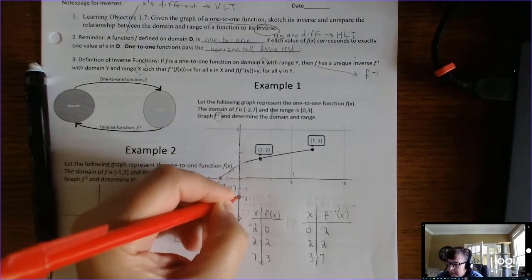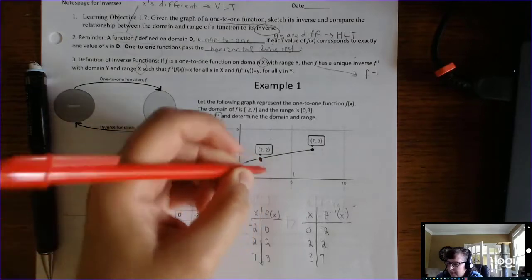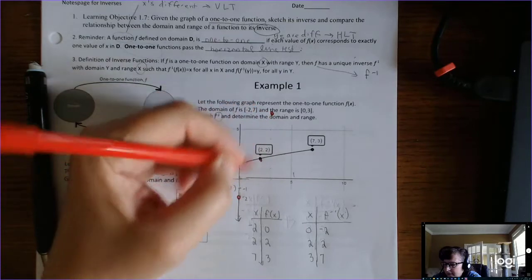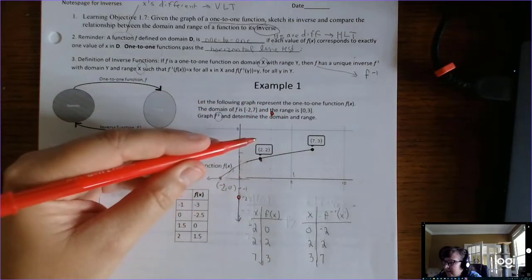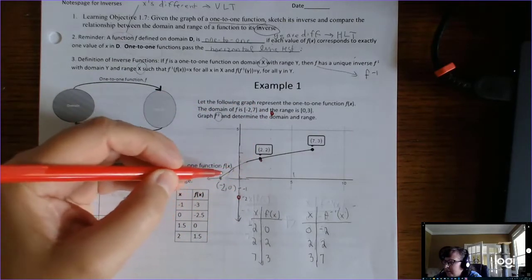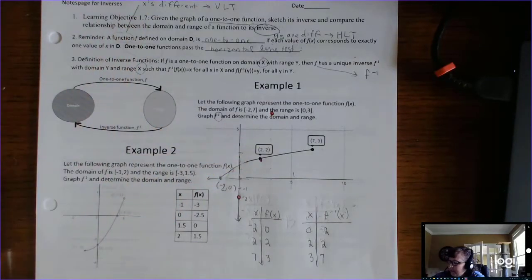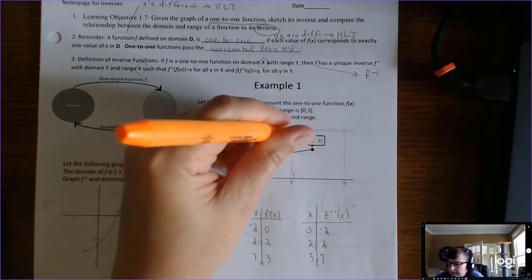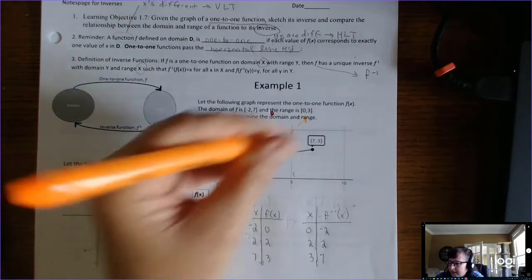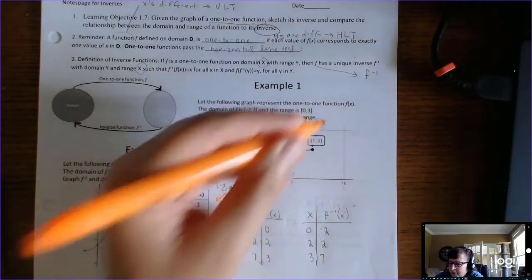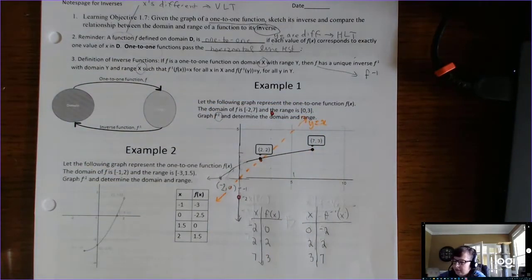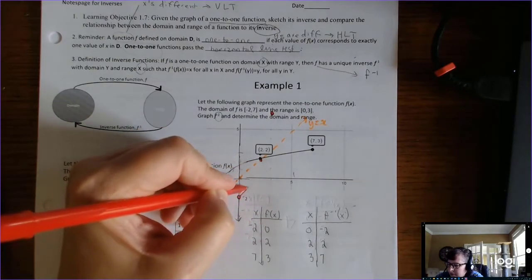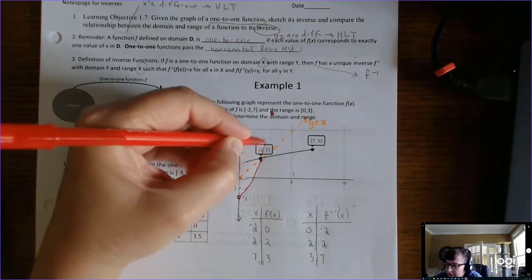When you graph it, it's going to look like this: 0, negative 2; then 2, 2; and then 3, 7 — I have to go off the graph a bit. Then when you connect the dots, you need to know that this graph is going to be symmetrical over the line y equals x, and that will help you figure out the shape of the graph. So I know the curve is going to look like that.